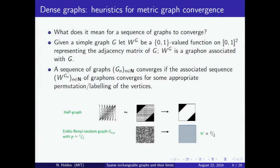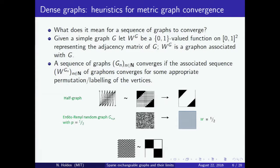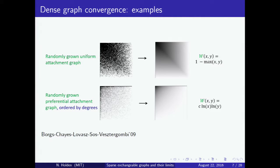We ask if there is any way in which these functions converge. In the case of the half graph, the obvious candidate is the function shown on the right. In the case of the Erdős–Rényi graph, one natural candidate is the function equal to one half everywhere. A sequence of graphs is converging if the associated sequence of graphons converges for some appropriate permutation or labeling of the vertices, since a graph may be associated with several graphons depending on how the vertices are enumerated.